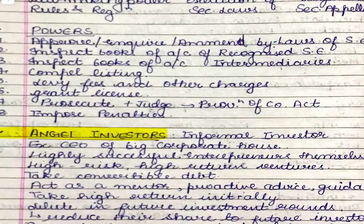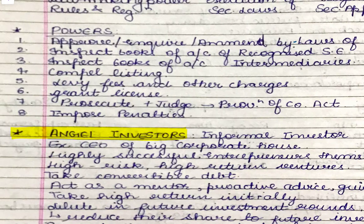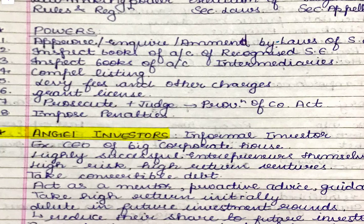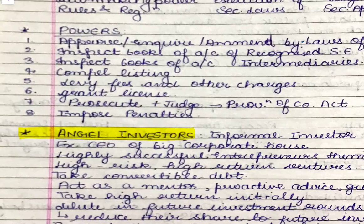These bylaws should be towards the betterment of investors, should increase healthy speculation, and should make the security market better. SEBI can approve the bylaws, amend them, and can inquire about them. This is the first power that SEBI possesses.